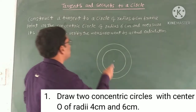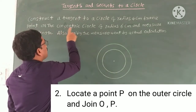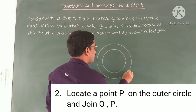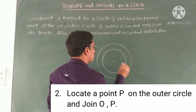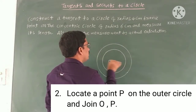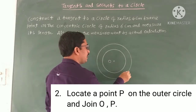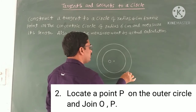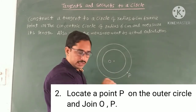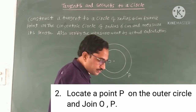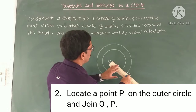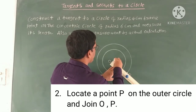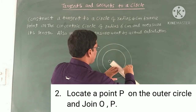Now locate a point on the concentric circle of radius 6 cm. This is center O, and this is a point on the outer circle, which I am denoting as P. Now join O and P.